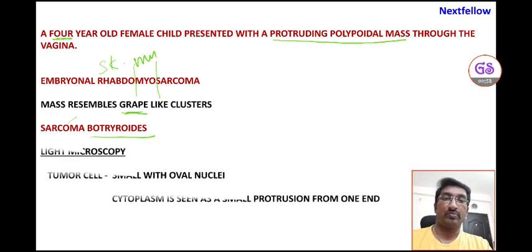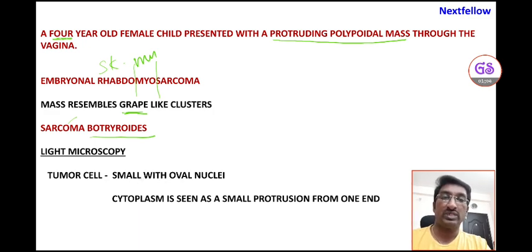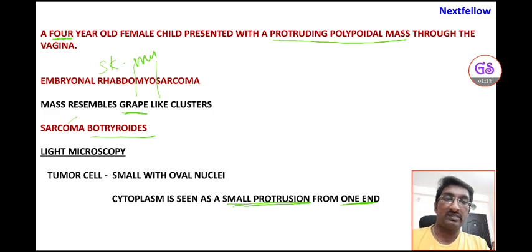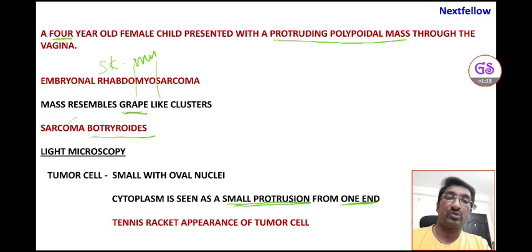Under light microscopy, the tumor cells are very small with oval nuclei. The cytoplasm of the tumor cell is seen as a small protrusion from one end, which is compared to a tennis racket. This tennis racket appearance of a cell under light microscopy is characteristic of embryonal rhabdomyosarcoma.